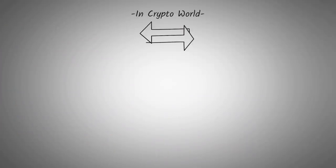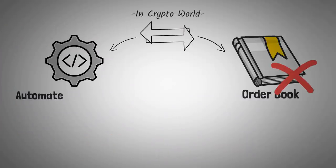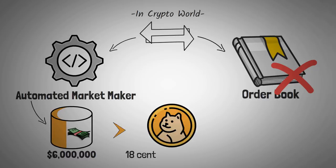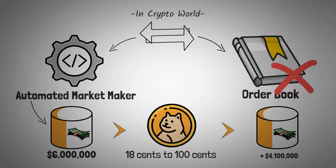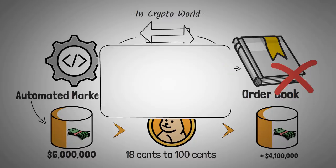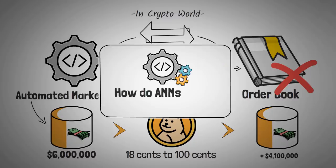In the world of crypto, we don't really use order books as much as we use a new special algorithm called an automated market maker. Now this is really technical, but I added up all the liquidity out there in all of those algorithms and found it to be around $6 million. This means to get the price from 18 cents to 100 cents, all we would need to add to the system is around $4.1 million of new investors' money. If you want to learn more about that special algorithm, I broke it down in another video on this channel.